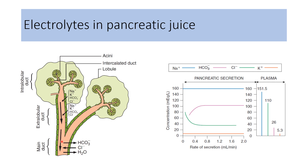When secretion rate increases, reabsorption of bicarbonate decreases, so bicarbonate concentration increases with the increase in the rate of secretion. Chloride ions are secreted in the main duct, so with the increase in the rate of secretion, chloride ion concentration decreases. Sodium and potassium concentration remain constant with the change in the rate of secretion.